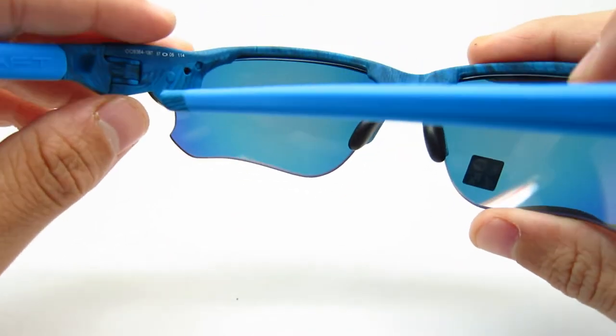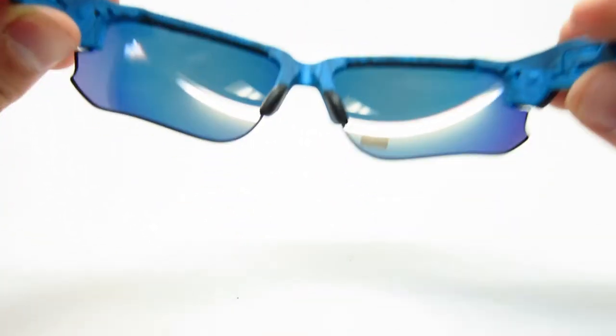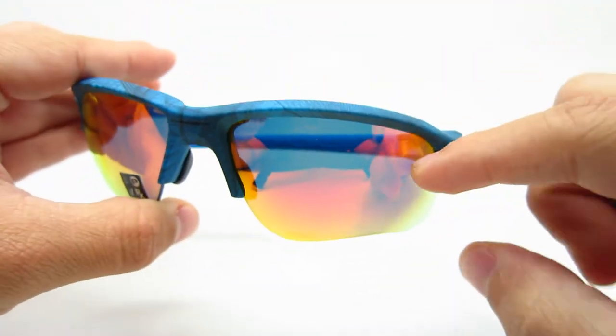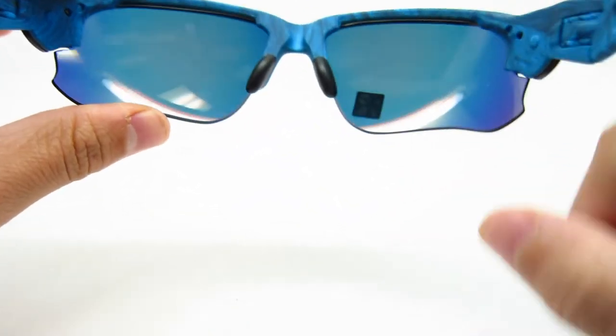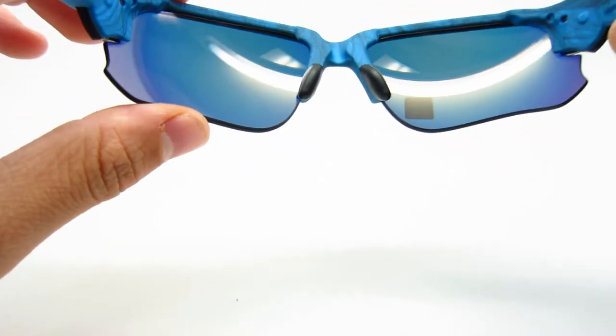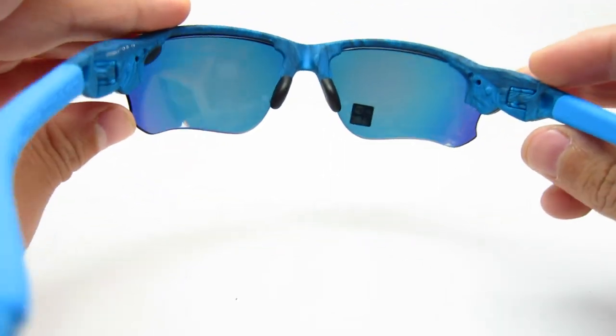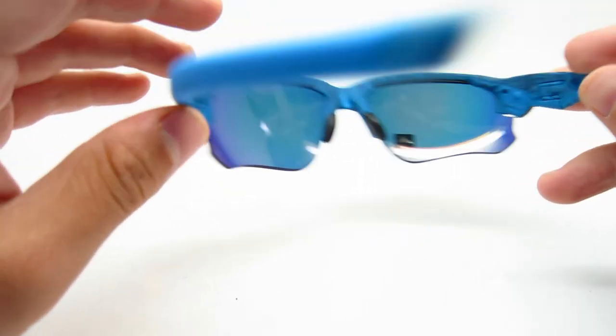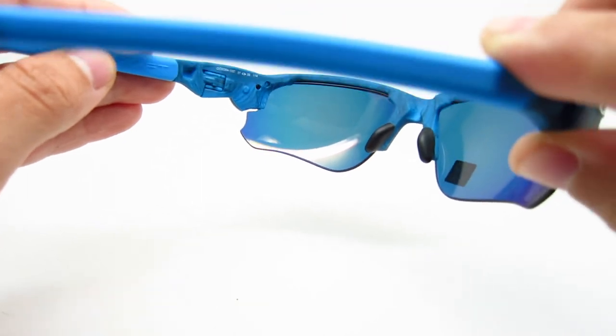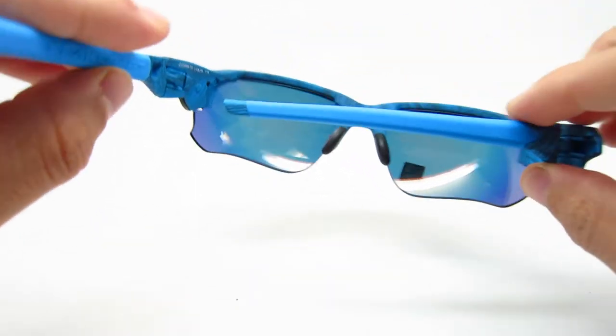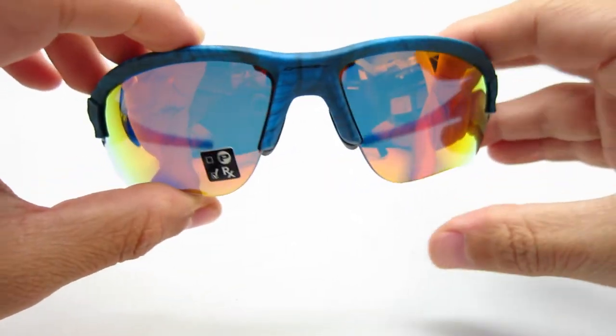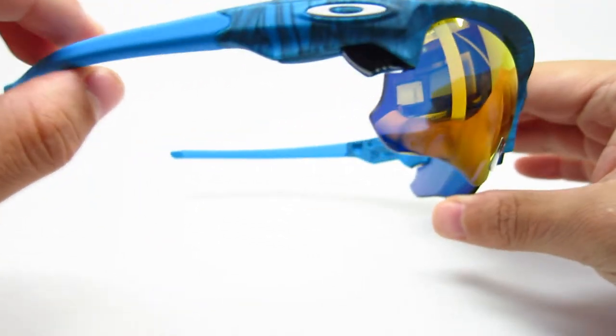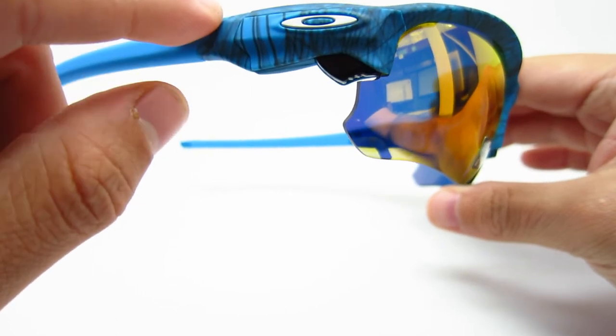And the lens color on these is the ruby iridium. So it is ruby iridium mirror lenses here. And then you're gonna see the world in like blue, it's like a darkish blue. These are for men. Technically, I mean, women can wear it too if they wanted to, but it was intended for, it was a men's style.